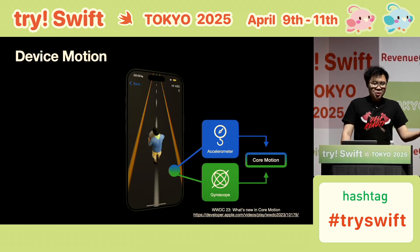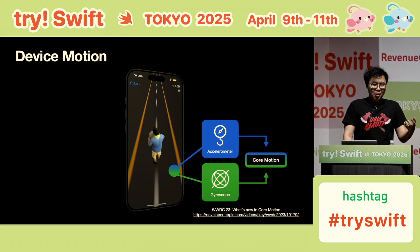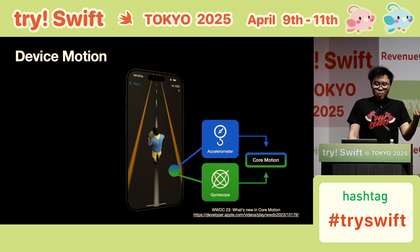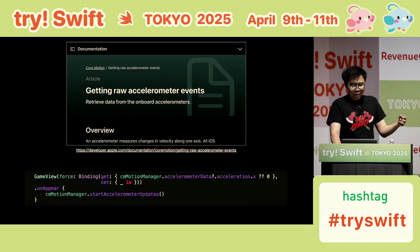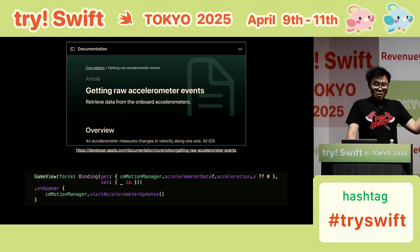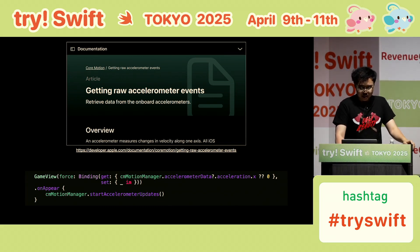Our first option is device motion. We can use the CoreMotion object to get the accelerometer data from your iPhone, which represents how much your phone is tilted. This is the reference about how to get the accelerometer data. You can read this document and write the code in the GameView, then we'll take a look.